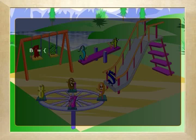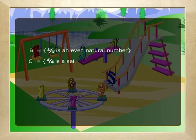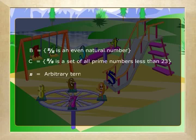We may not be able to list all the elements in the set, so we cannot always write the roster form. We have another representation of sets called the set builder form or the rule form. For example: B is equal to {x such that x is an even natural number}, and C is equal to {x such that x is a set of all prime numbers less than 23}. Here the letter x denotes any arbitrary term.